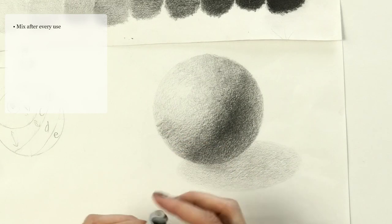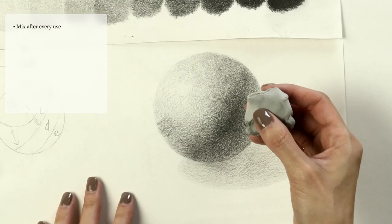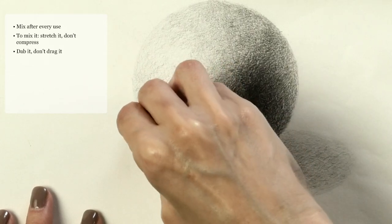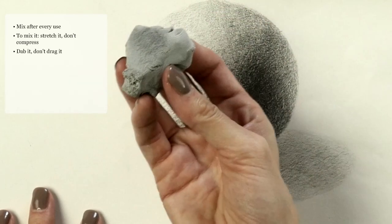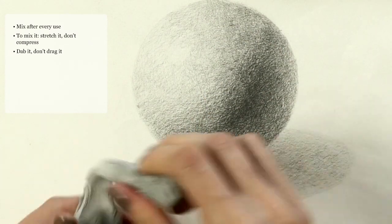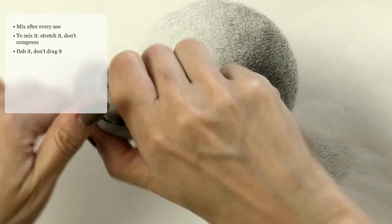After mixing up your kneaded eraser, you're going to be able to dab instead of dragging it. You can see that it takes off some of the value. It lifts it right off, so you press it down and lift it up.